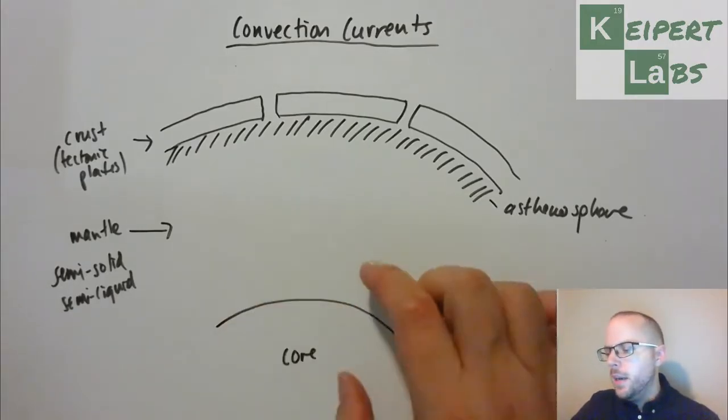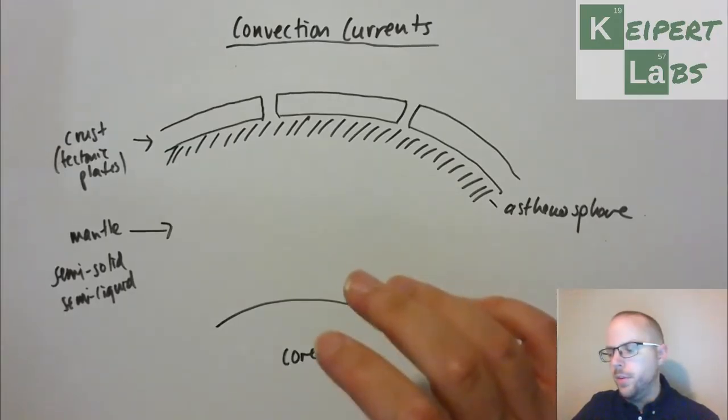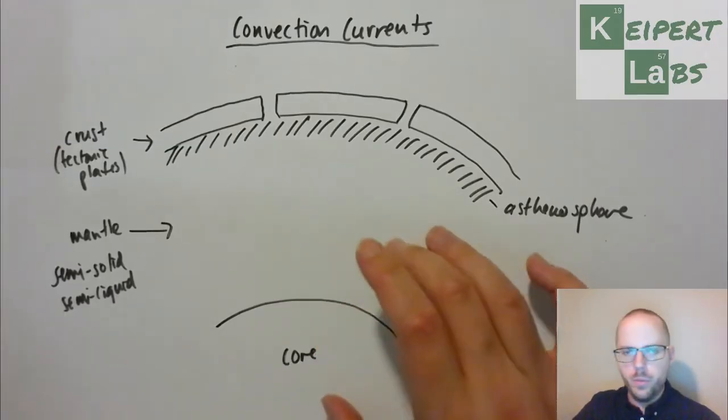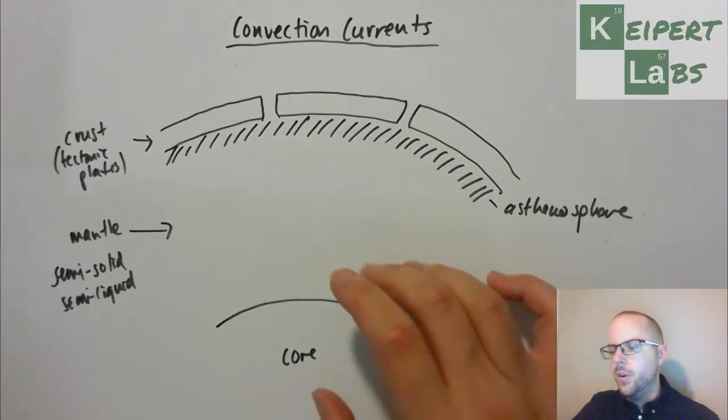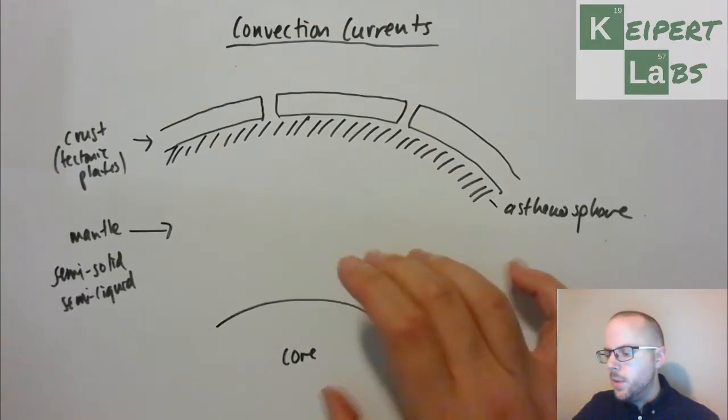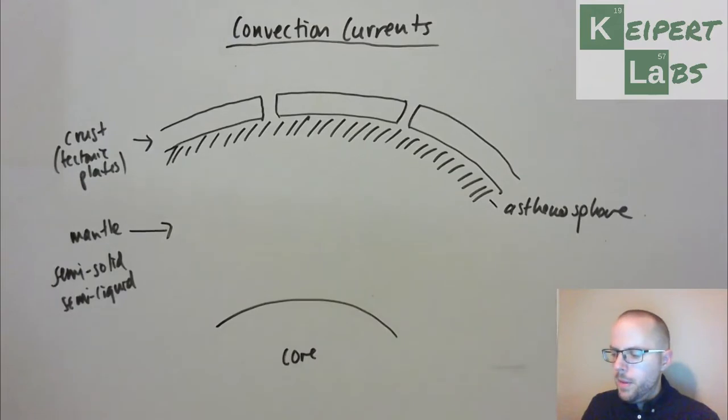It behaves in some ways similar to water, and so we often use water to model it. But what happens is, remember that the core down here is hot. The further down we go, the hotter it gets inside the Earth.